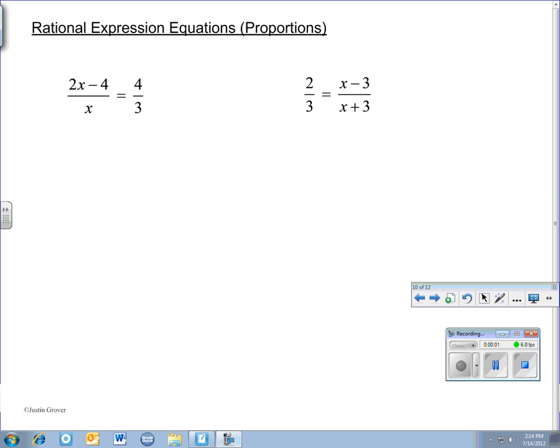Two types of rational expression equations. This would be the type that is a proportion, where it's just one fraction equal to another. And the best way to solve a proportion is by cross multiplication.